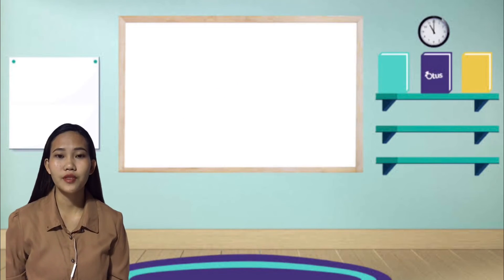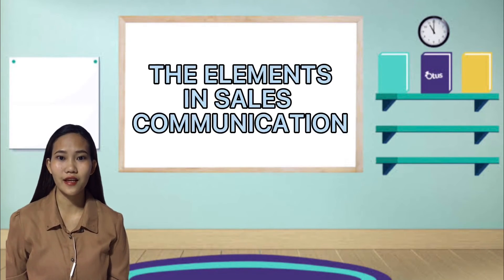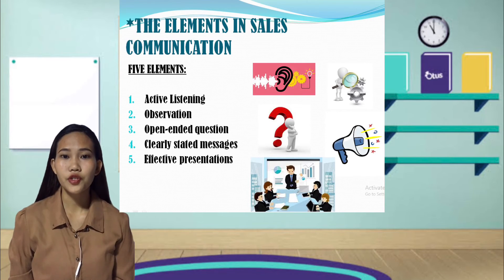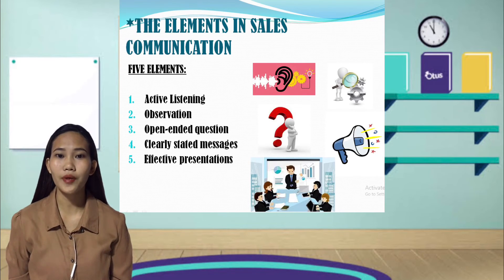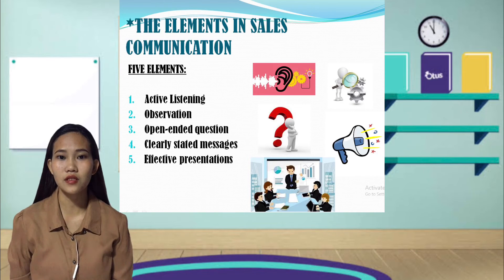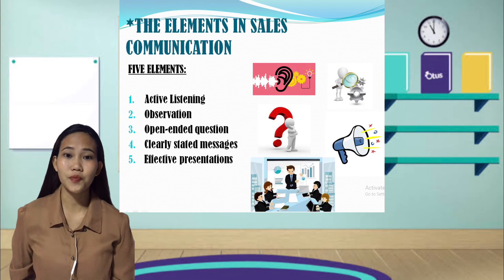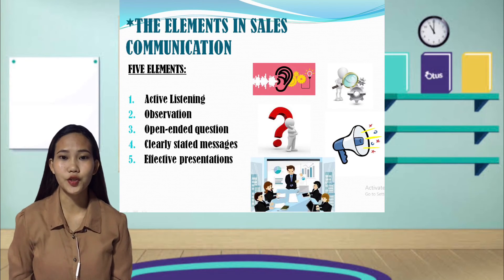Today I will be discussing the elements in Sales Communication. Sales Communication has five elements: first is active listening, second is observation, third is open-ended questions, fourth is clearly stated messages, and lastly effective presentations. Each of these elements has its place in the sales process. They are all important.